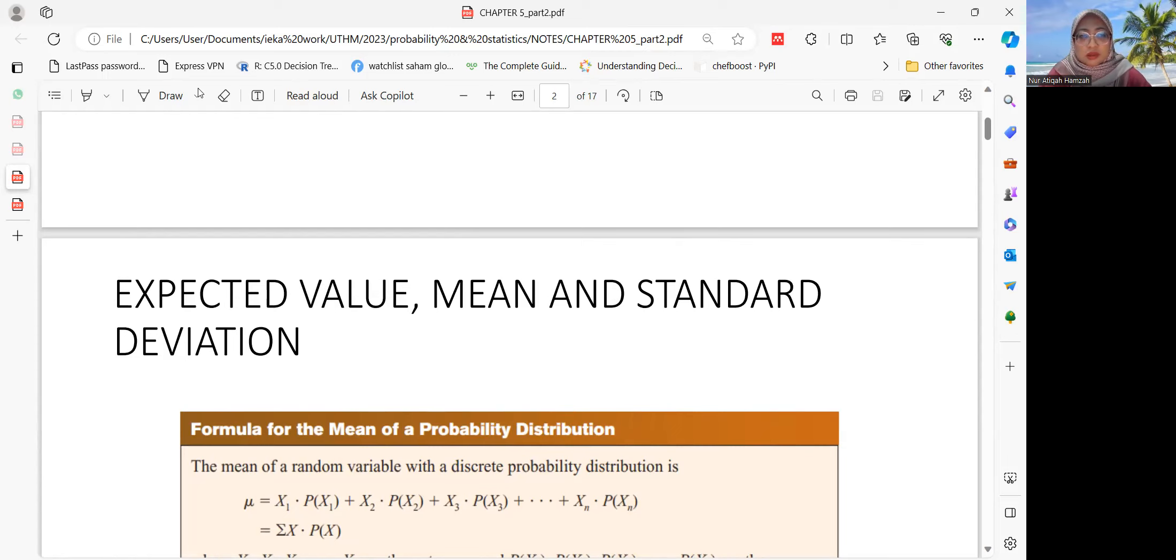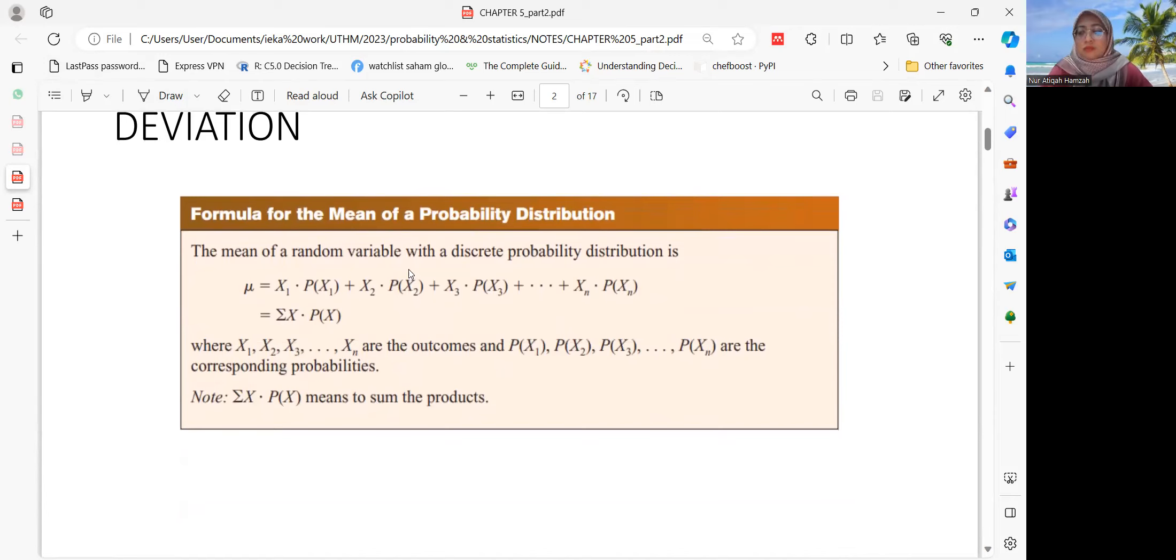So we start with the mean. Formula of the mean of a probability distribution: the mean of a random variable with a discrete probability distribution is mu equals x1 times P(x1) plus x2 times P(x2) plus x3 times P(x3) until xn times P(xn). Therefore we can summarize it as summation of x times P(x), where x1, x2, x3 until xn are the outcomes and P(x1), P(x2), P(x3) are the corresponding probabilities.